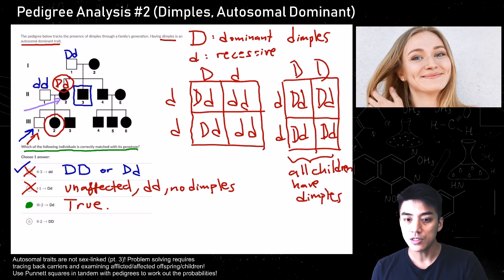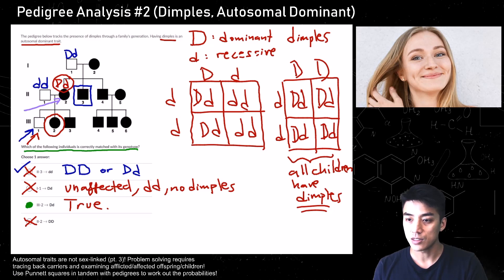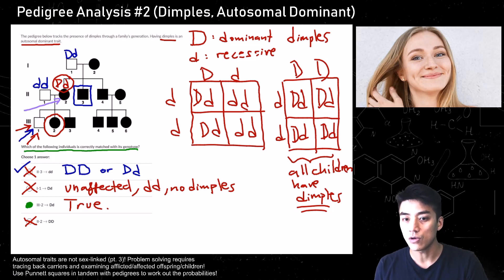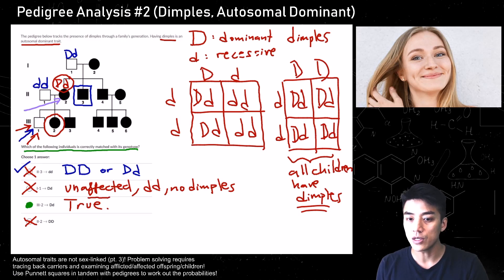For choice D, individual 2,2 cannot be homozygous dominant — as shown in the second Punnett square, that would mean all of the children would have dimples, and since individual 3,1 is unaffected, that can't be the case. So we eliminate choices A, B, and D, leaving us with individual 3,2 being heterozygous dominant. That's the only correct answer.